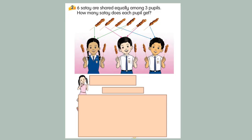Example 2. 6 sate are shared equally among 3 pupils. How many sate does each pupil get? I have 1, 2, 3, 4, 5, 6. So 6 shared among 3 and each get 2.